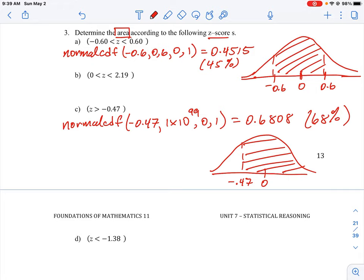So fairly straightforward question to do. You just have to use the normal CDF function and realize that the mean and the standard deviation are already implied to be zero and one because the scores are standardized.